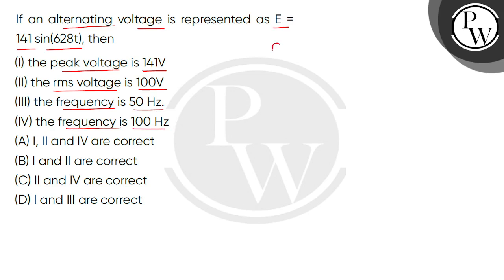So first of all, let's write the equation. The EMF voltage is given as 141 sin 628 times t. Now let's compare this to the standard equation of instantaneous voltage, which is E naught sin 2 pi times the frequency times time t.